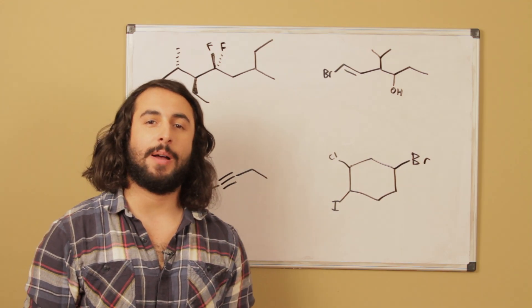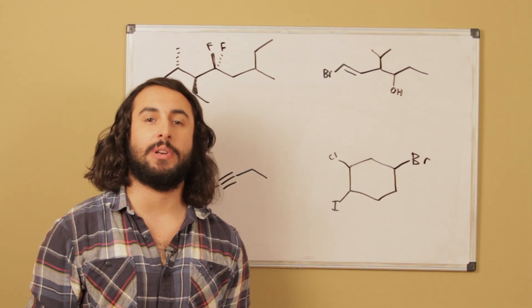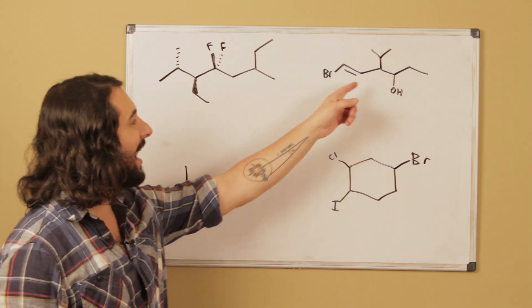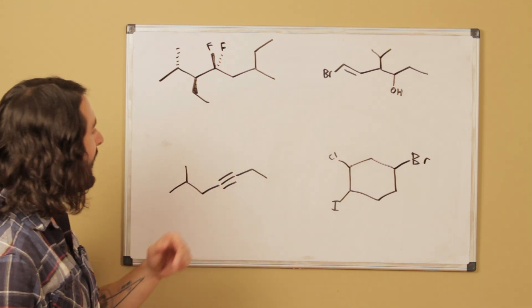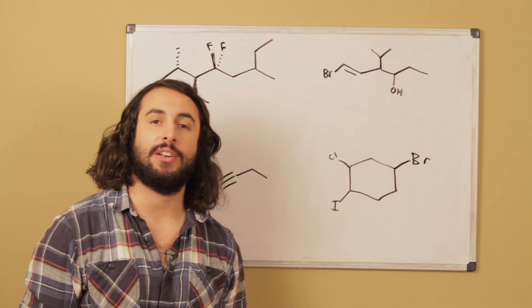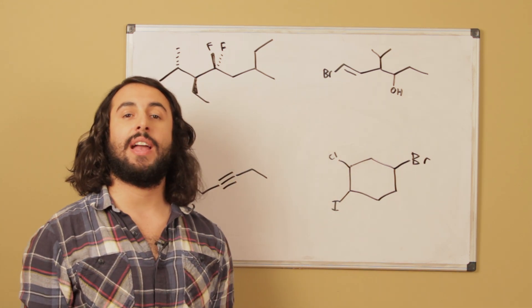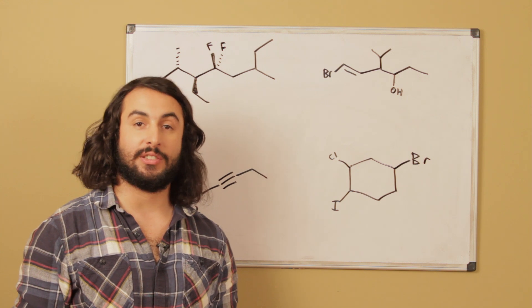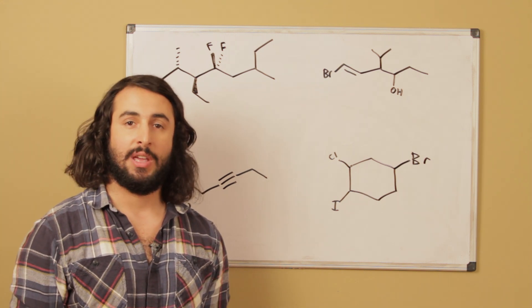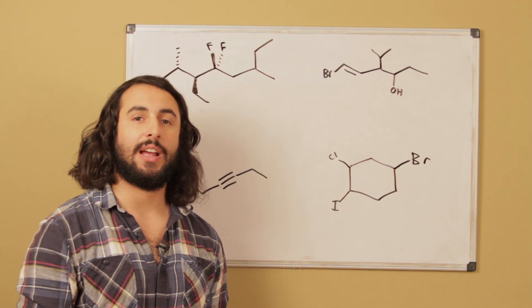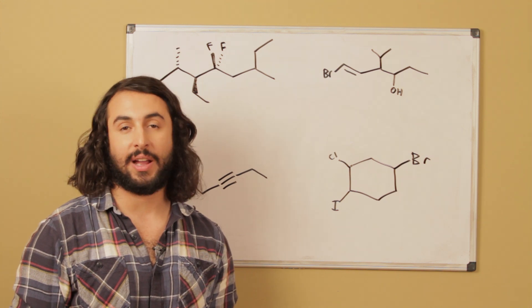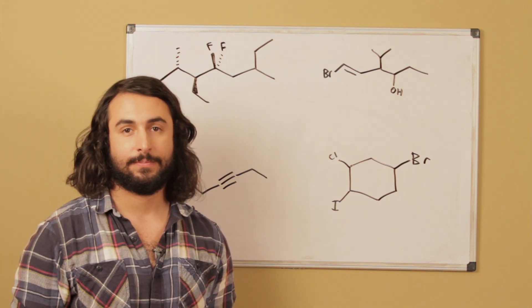Today's practice problem is about nomenclature. We've got an alkane, an alkene, an alkyne, and a cycloalkane, so let's go ahead and give these the correct IUPAC name. If you're having trouble with this, go ahead and check out my several lectures on IUPAC nomenclature.